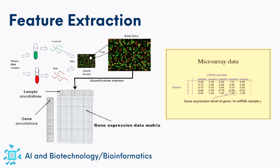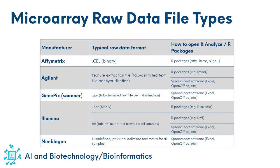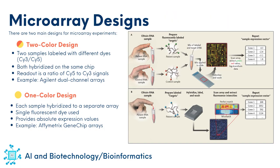In this way, microarrays allow us to measure the expression levels of thousands of genes simultaneously. This large matrix of raw data will be used for further downstream analysis. The file format of the raw data depends on the platform. For example, Affymetrix arrays produce .CEL files and are the most widely used platform, with most public datasets originating from them. Agilent arrays generate .txt files, and other platforms may have their own formats. There are two main designs for microarray experiments: one-color and two-color microarrays.